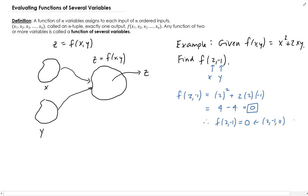So that means for the inputs 2 and negative 1, they're going to get mapped to 0. And later, we'll talk about how to plot this in three dimensions.